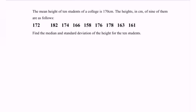Referring to the question: the mean height of 10 students of a college is 170 cm. The heights in cm of 9 of them are given. Find the median and the standard deviation of the height for the 10 students.